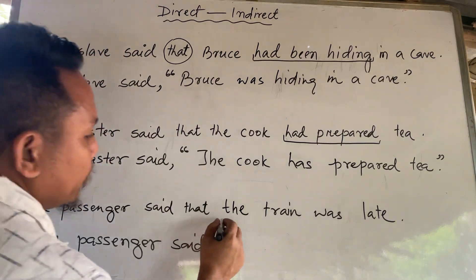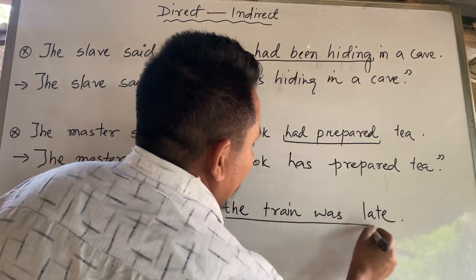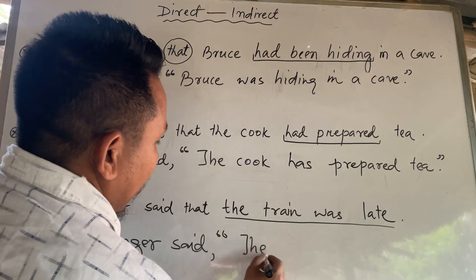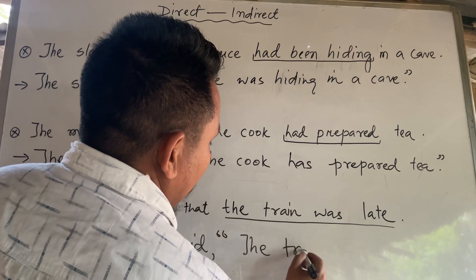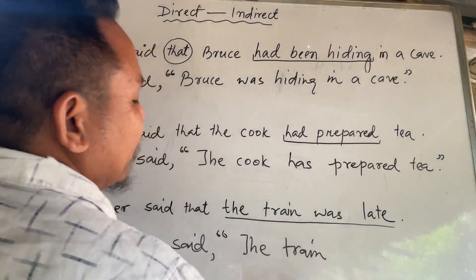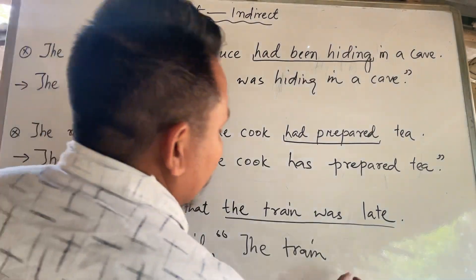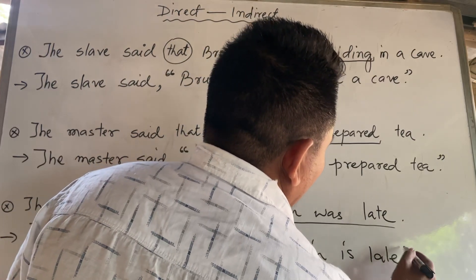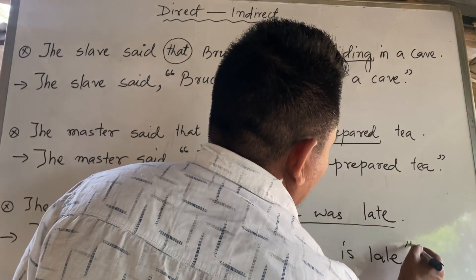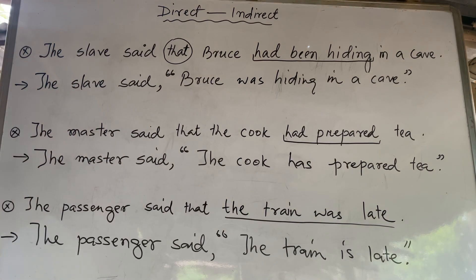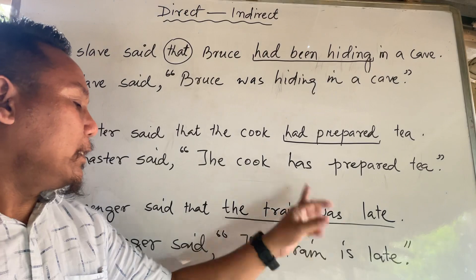The train was let. The train is let. Was — nide; is — nide; was.